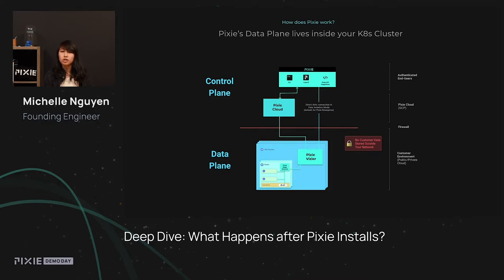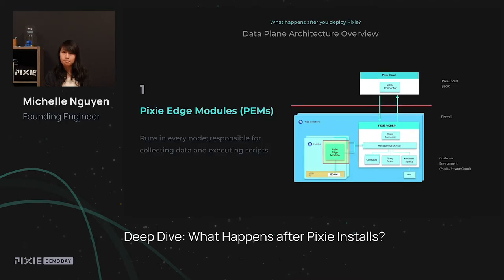By having this separation, you're able to keep all of your data within your network in your cluster. Let's dive a little bit deeper into what is actually running inside your cluster — the data plane. We deployed a set of services and pods to your cluster, which we call Pixie Vizier. You can see that in this diagram here. We're going to step through each component of Pixie Vizier so that you understand exactly what each of these things do.